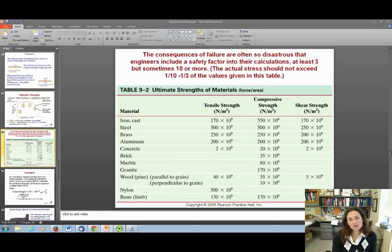Here are some values that come in a table in your textbook for these ultimate strengths in materials. They're given for tensile, which is stretching, the compressive strength or pushing, and the shear strength, which is torsion on the material. The consequences of failure are so disastrous that for most applications, engineers include a safety factor into their calculations of at least three, but sometimes ten or more depending on how careful they'd like to be. You design it so the actual stress shouldn't exceed one-tenth to one-third of the values given in this table.